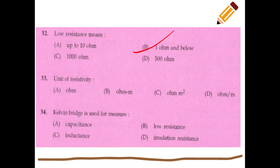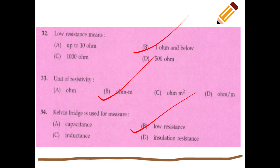The unit of resistivity is ohm-meter. A Kelvin bridge is used to measure low resistance.